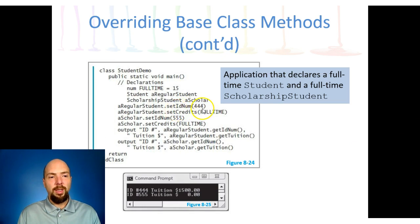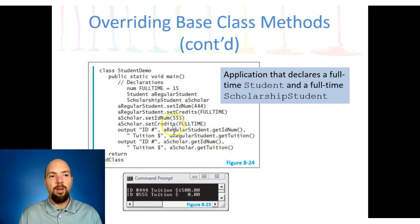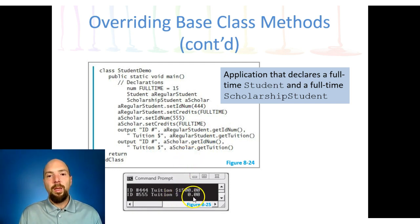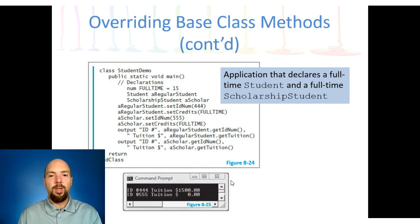Regular student has set ID number 444 and set credits to full-time which is 15. The scholarship student has ID 555, and we set credits to full-time as well. The get tuition amount is different though — for the regular student they owe $1,500, but for the scholarship student the method for calculating tuition is overridden to return nothing, so they owe $0 because the scholarship student's tuition method overrides the regular student's.